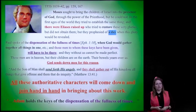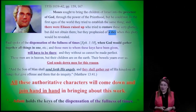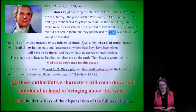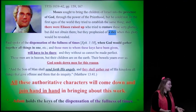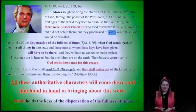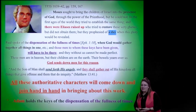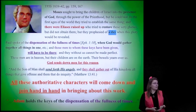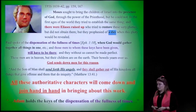Those men to whom these keys have been given—these gathering keys—will have to be there. They without us cannot be made perfect. These men are in heaven but their children are on earth, and their bowels yearn over us. God sends down men for this reason, and the Son of Man shall send forth his angels, and they shall gather out of his kingdom all things that give offense and them that do iniquity—Matthew 13.